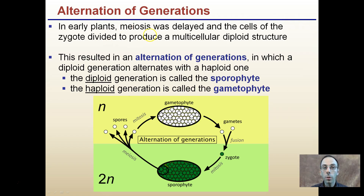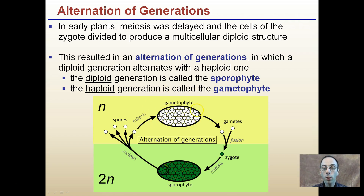In early plants, meiosis was delayed and the cells of the zygote divided to produce a multicellular diploid structure. This resulted in an alternation of generations in which a diploid generation alternates with a haploid one. The diploid generation is called the sporophyte — producing spores — and the haploid generation is called the gametophyte, producing gametes. The gametophyte produces gametes that fuse to form the zygote, which undergoes mitosis to form the sporophyte, which then undergoes meiosis to produce spores that become the gametophyte.